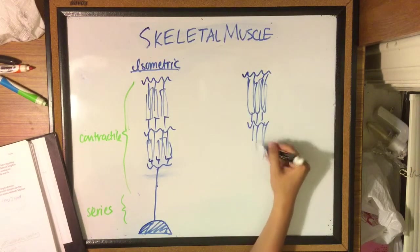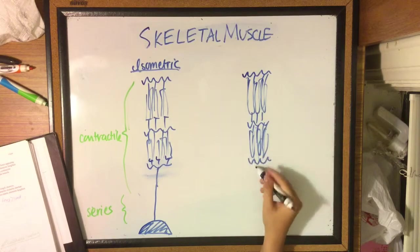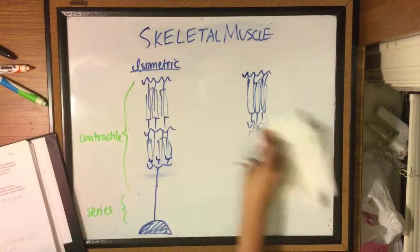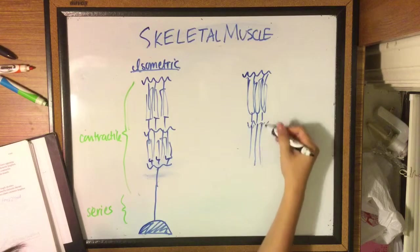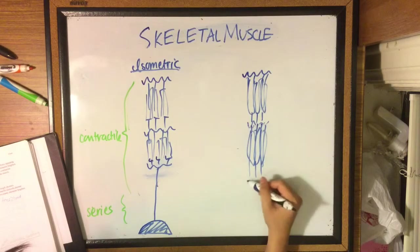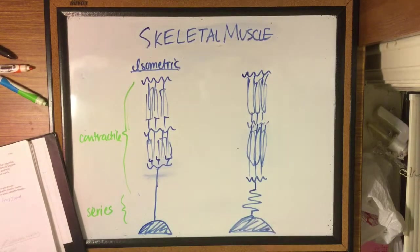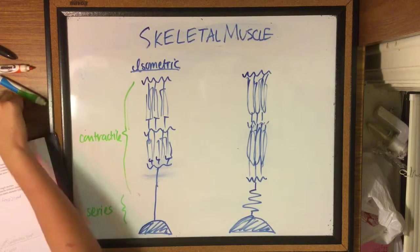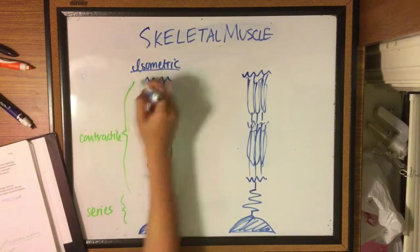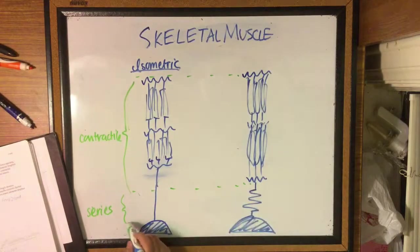On the other hand, isotonic contraction is when the muscle length shortens and the series elastic element lengthens. As a whole, the muscle shortens and is able to lift the load which is less than the force generated.